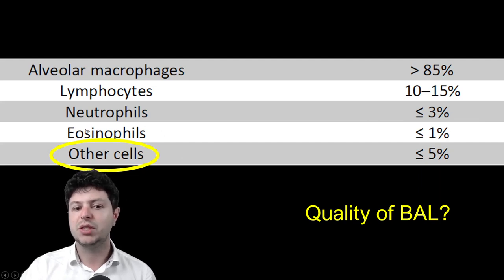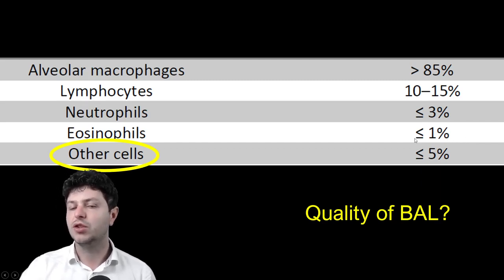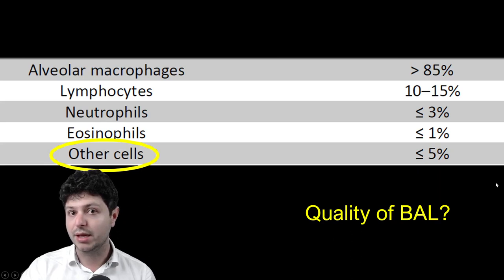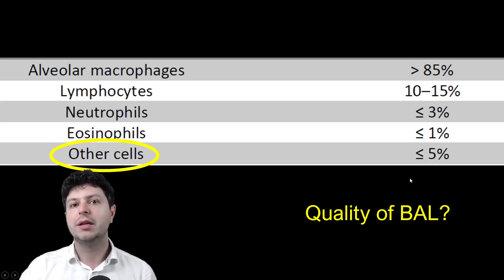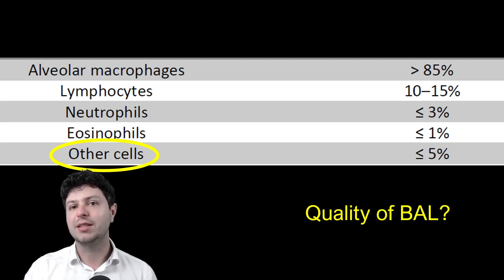I'll go into future videos on what these findings actually mean. For eosinophils, you should have very few; if you have a high number, you need to think of specific conditions — again covered in future videos. For now, this is the normal differential cell count. Pay attention to BAL quality to get an accurate characterization of what's going on deep within the lungs. I hope to see you in future videos on my channel and on the website interstitiallungdisease.info. Thank you very much and all the best.